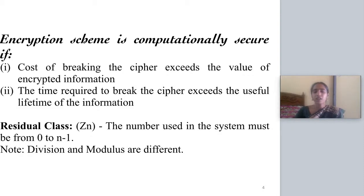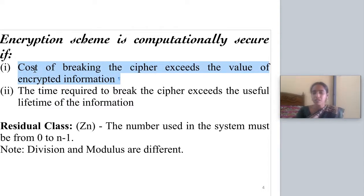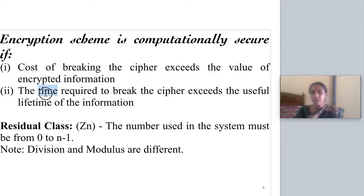Suppose you are inventing a cryptographic system. You cannot assume that your system is secure — you cannot say no one can decrypt my encrypted text. So how can you tell that your scheme is computationally secure? If your cryptographic scheme is computationally secure, it must have two properties. The first property is the cost of cryptanalysis: if someone without knowledge of the sender and receiver tries to retrieve the plain text from the ciphertext, and the cost of doing so exceeds the value of the information, then your scheme is computationally secure.